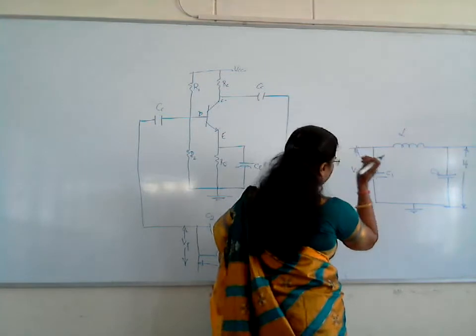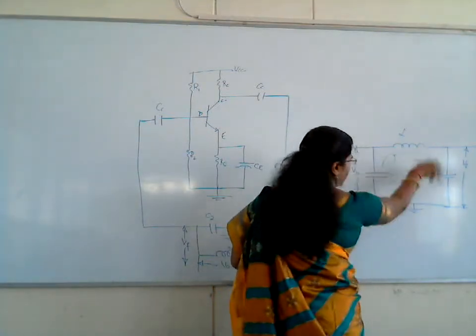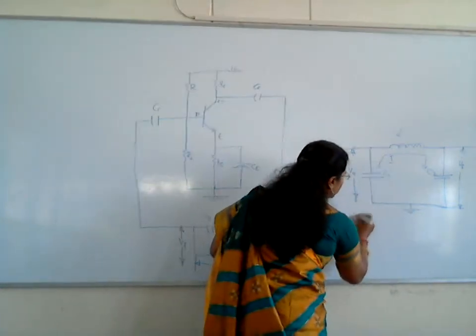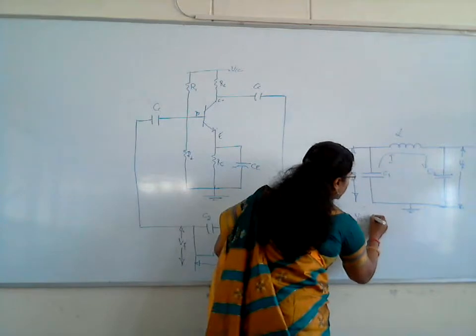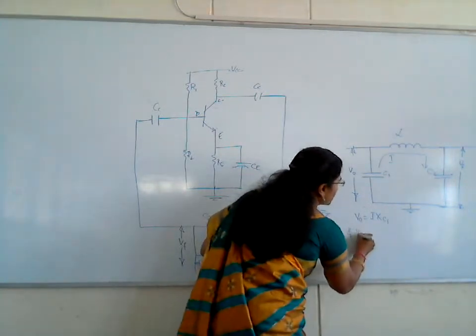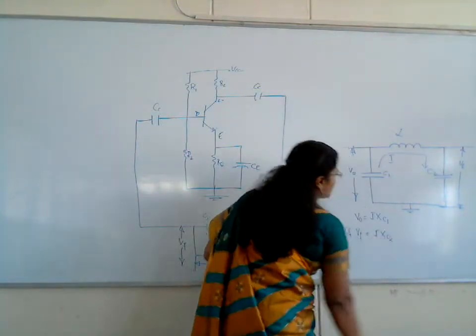Let us calculate the feedback gain. The current going through the series circuit is I, and the voltage drop across C1 is I into Xc1, and the voltage drop across C2, Vf, is equal to I into Xc2.